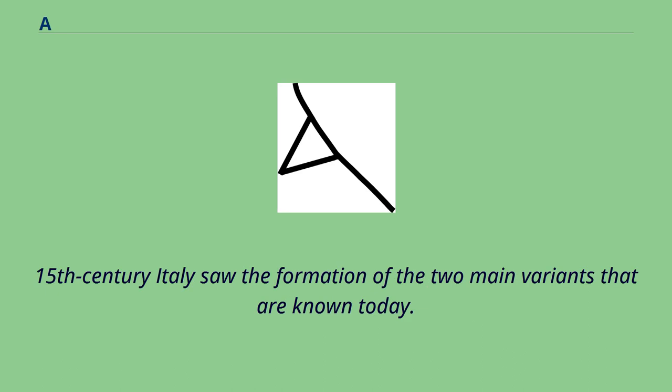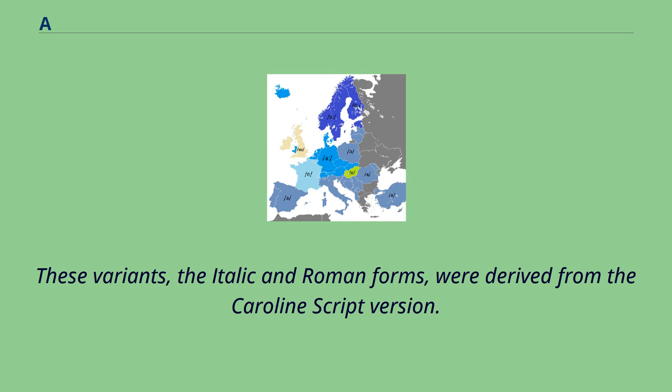15th century Italy saw the formation of the two main variants that are known today. These variants, the italic and Roman forms, were derived from the Caroline script version.